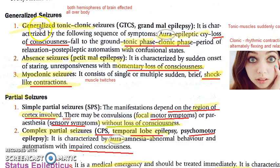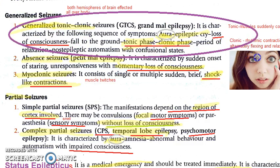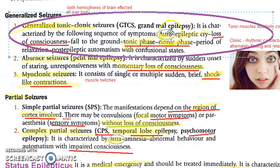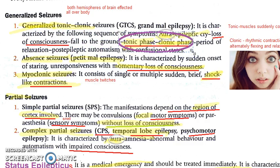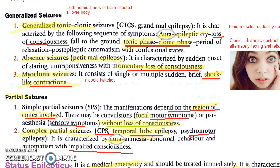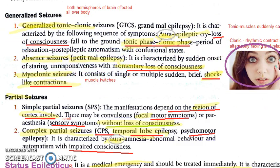In generalized tonic-clonic seizures (GTCS), also called grand mal epilepsy, both hemispheres of the brain are affected. The sequence of events: the person sees an aura, there is an epileptic cry or scream, loss of consciousness, and the person falls to the ground. Then there is a tonic phase followed by a clonic phase — that's why it's called tonic-clonic. It ends with relaxation and post-epileptic automatism with confusion. Tonic means sudden muscle contraction; clonic means rhythmic alternating flexion and relaxation.